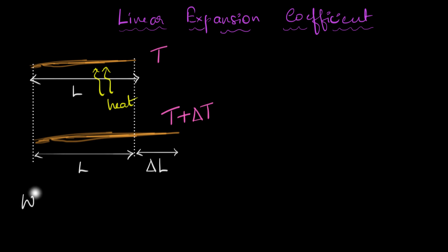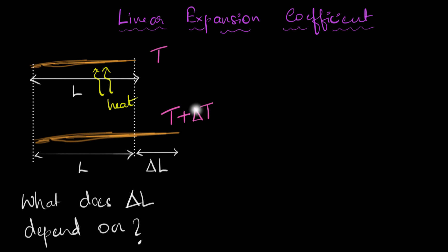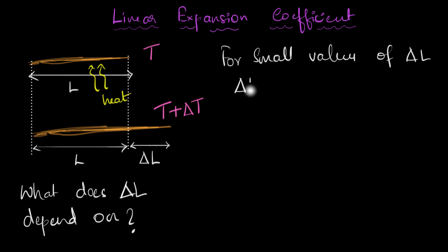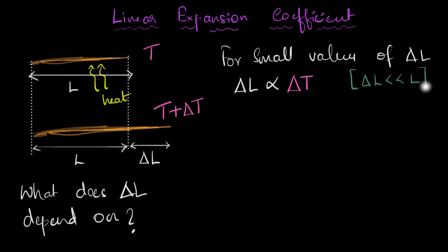The big question now is: what does delta L depend on? We know that the wire expanded because we increased the temperature. So more you increase the temperature, more the wire will expand — more the value of delta T, more the value of delta L. Experiments support this. In fact, for small values of delta L, it's found that delta L is proportional to delta T. If you double the value of delta T, then delta L will also double. This holds as long as delta L is much smaller than L.